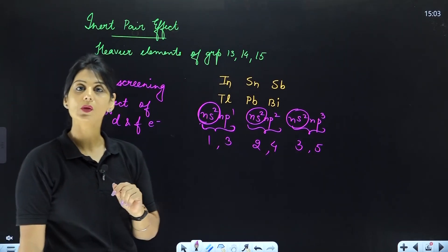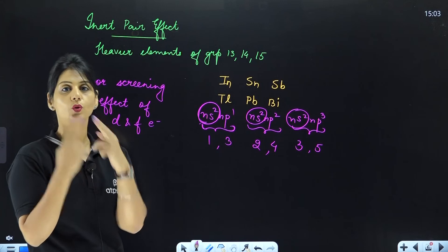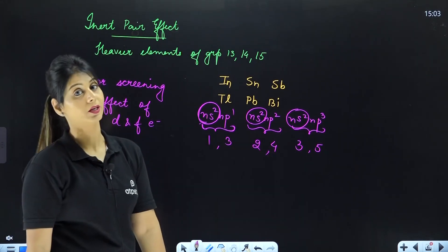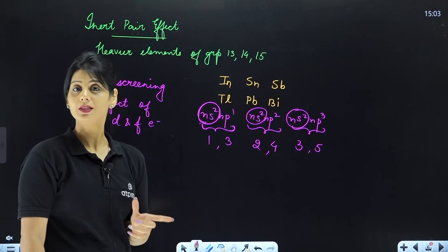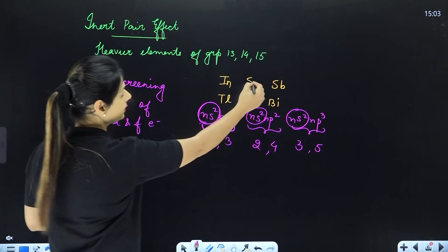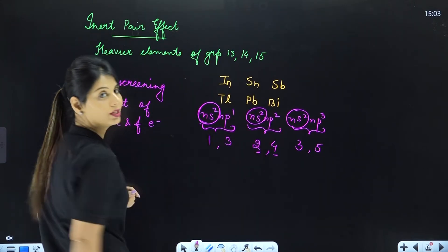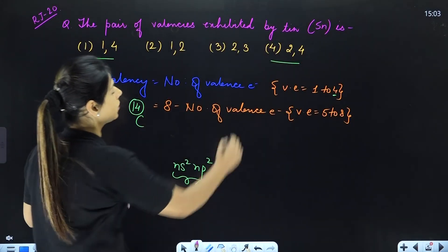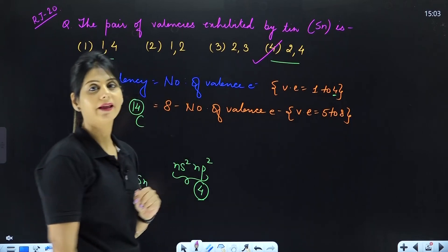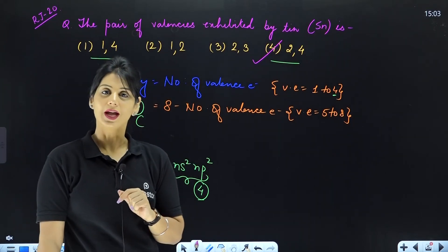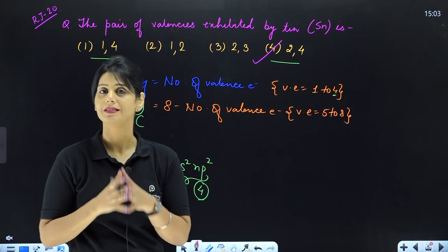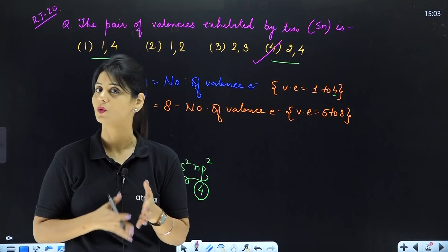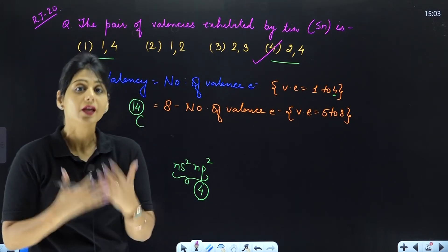So, coming back to Tin — the valency of 4 works, and 2 also works due to the inert pair effect. Looking at the options, we have 2 or 4 — that is option 4, and this is the correct answer. Here a very good concept is applied. You should do previous year questions so your existing concepts get revised and you will also get many new concepts.